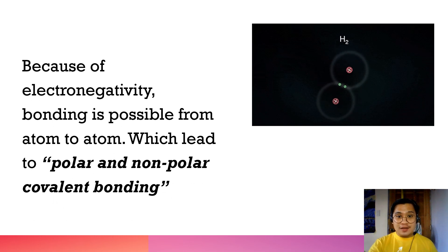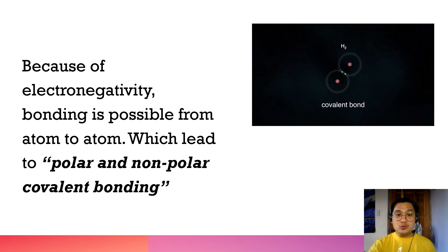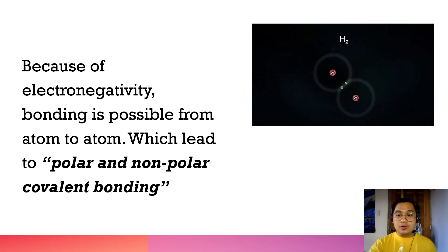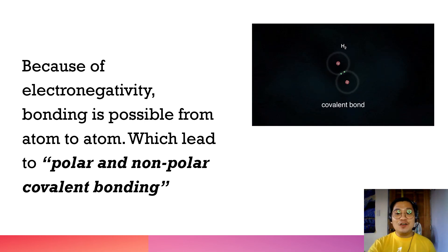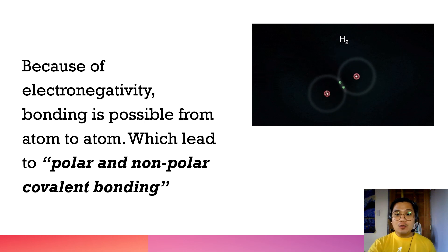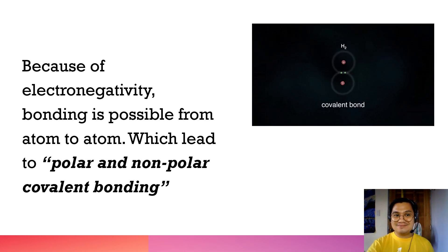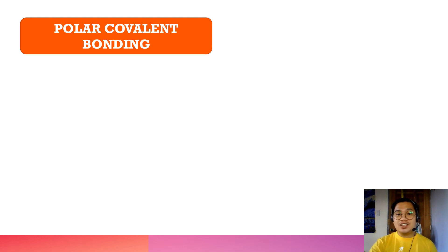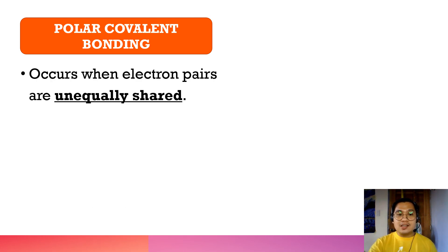Because of electronegativity, bonding is possible from atom to atom since electrons are responsible for the attraction. This leads to covalent bonding, and we have two types: polar and nonpolar covalent bonding. The first type is polar covalent bonding. In polar covalent bonding, this occurs when electron pairs are unequally shared.